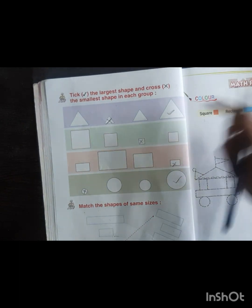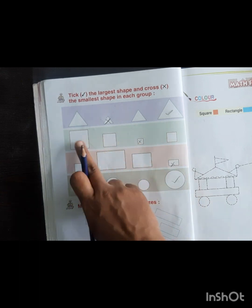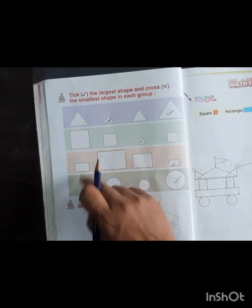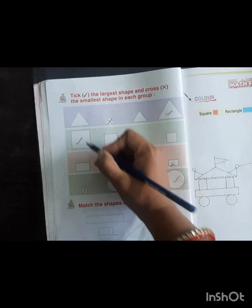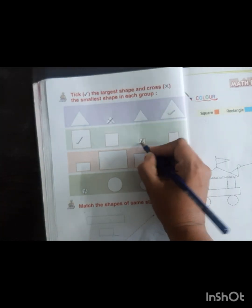There are four squares. Which one is largest? This one. So we will tick it. And this is the smallest, so we have crossed it.